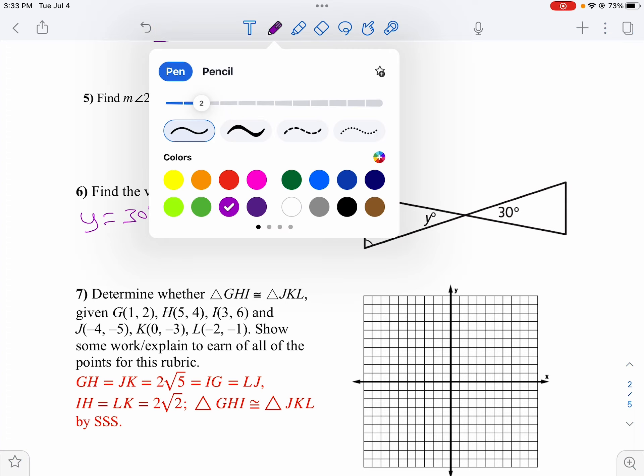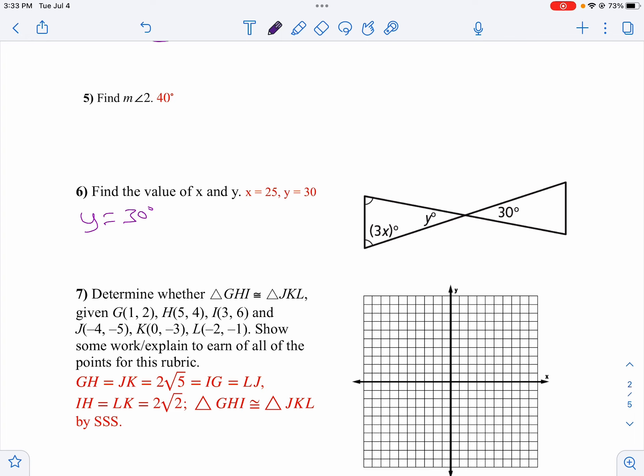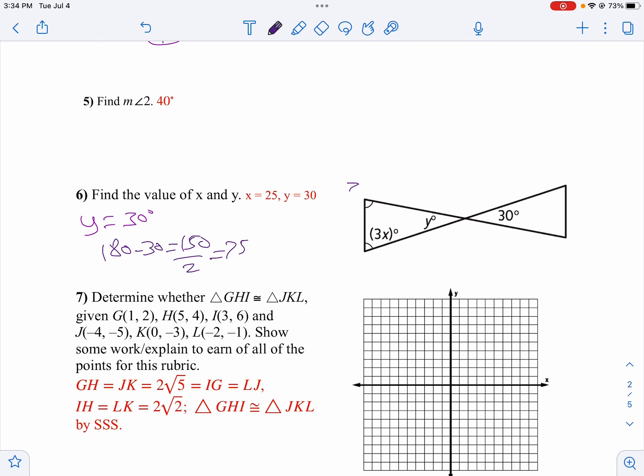Now because y is 30, to find the measure of the missing angles in that triangle, I'm going to notice it's isosceles so I know these two angles are congruent. 180 minus 30 is going to be 150 degrees, which if I divide that by 2 tells me each angle is 75 degrees. Well that means 3x equals 75. I'll divide by 3. x is 25. There you have that one.